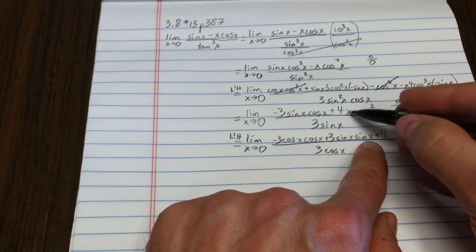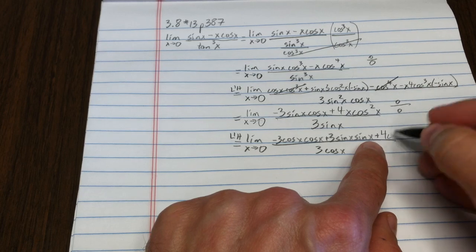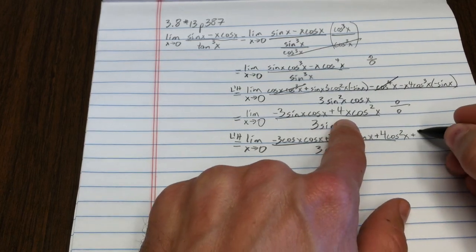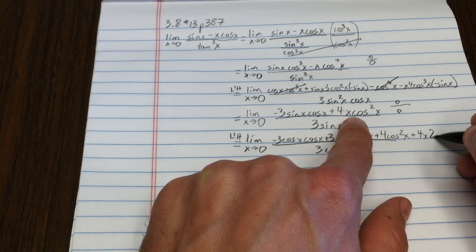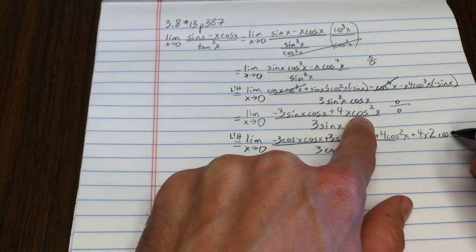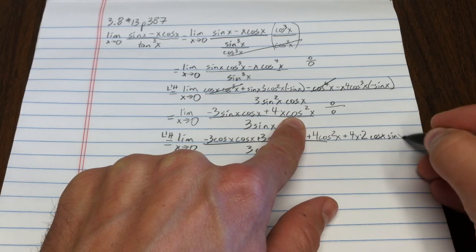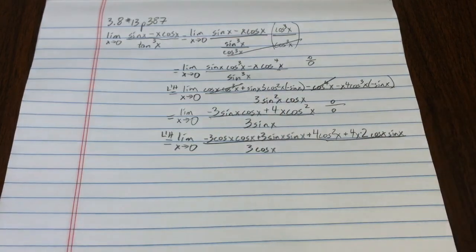I have to use the product rule here. So, plus 4, derivative of the first times the second. Now, leave the first alone. 4x times 2, cosine to the 1, x, sine x. There we have it.